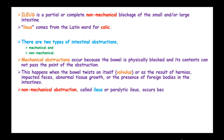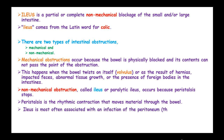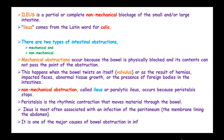A non-mechanical obstruction called ileus or paralytic ileus occurs because peristalsis stops. Peristalsis refers to the rhythmic contraction that moves materials through the bowel. Ileus is most commonly associated with infection of the peritoneum, the membrane lining the abdomen, and it is one of the major causes of bowel obstruction in infants and children.